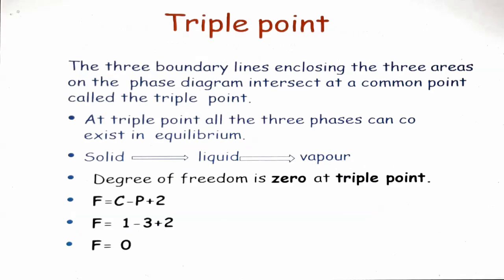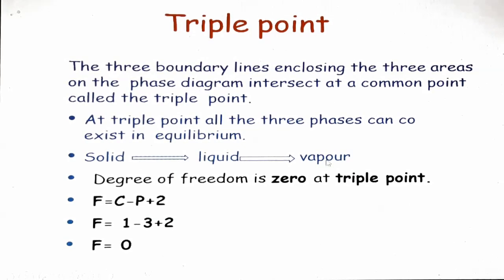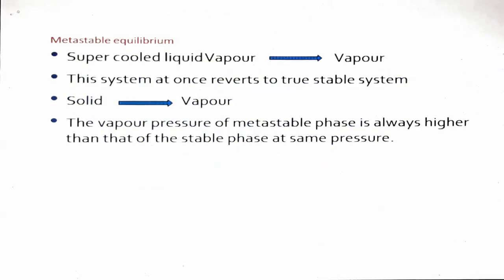At the triple point, three phases — solid, liquid, and vapors — are in equilibrium. Applying F = C − P + 2: C = 1, P = 3, so F = 0. The system is invariant at the triple point.